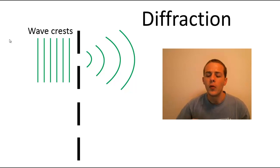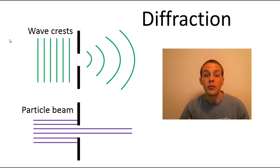And this is very different from the way that particles behave when you pass particles through a slit. When you pass particles through a slit, they're just going to pass straight through—they're not going to diffract, they're not going to bend around that slit.